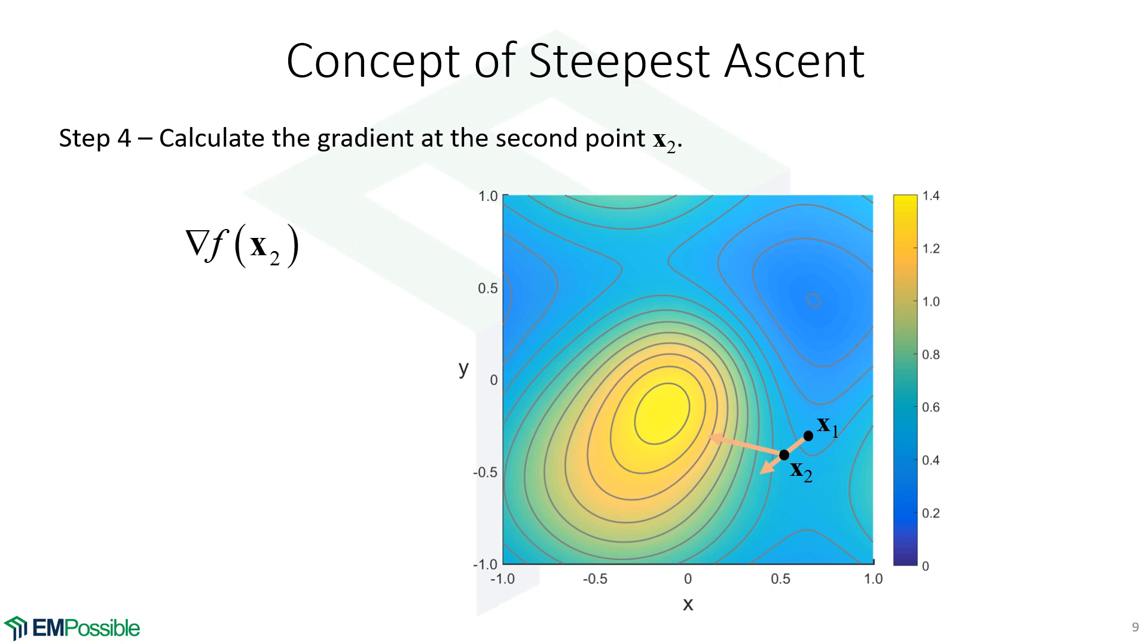We start all over again. We calculate the gradient at x2, and then we move in the direction of that gradient. How far do we move in that gradient? Well, that's controlled by alpha. Alpha times the gradient tells us how far. And that takes us to yet a third point, x3. And this keeps going.